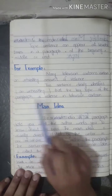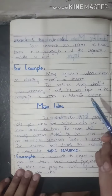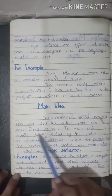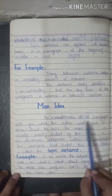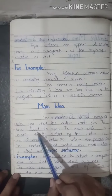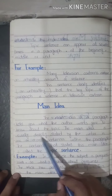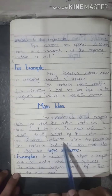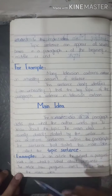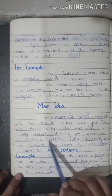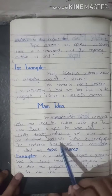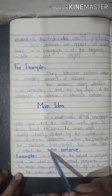The main idea of a paragraph tells you what the author wants to communicate. The main idea is usually directly stated by the writer in one or more sentences within the paragraph, and is usually related to the topic sentence.